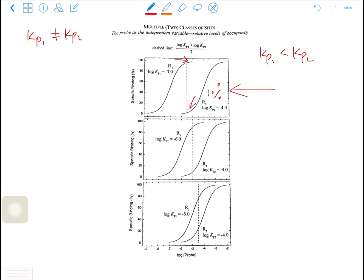The difference between KP1 and KP2 is large enough. If the difference between KP1 and KP2 is small, for example, in the bottom panel, there is too much overlapping between the two curves.